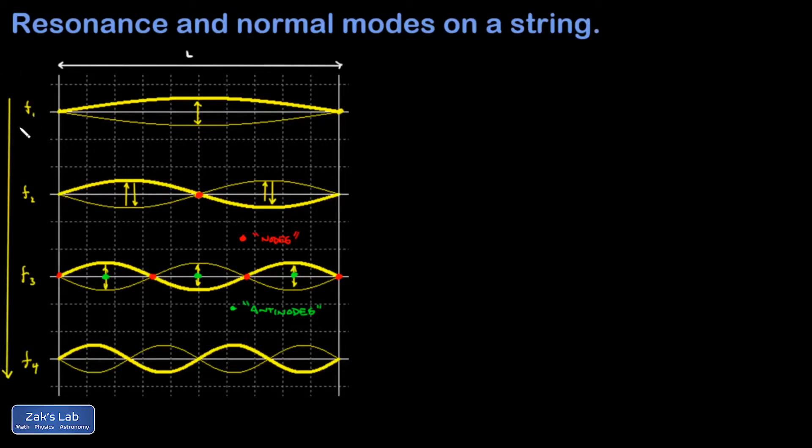F1 is called the fundamental. It's also known as the first harmonic. F2 could be called then the second harmonic, but is also called the first overtone. And then you would proceed from there.